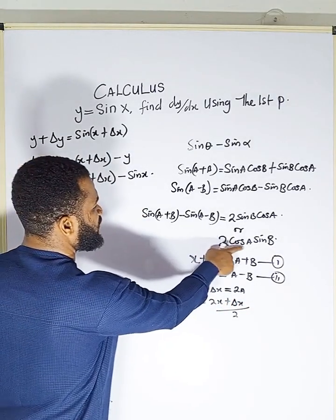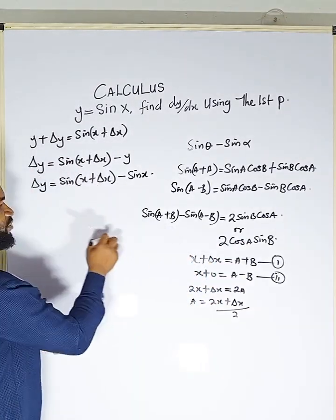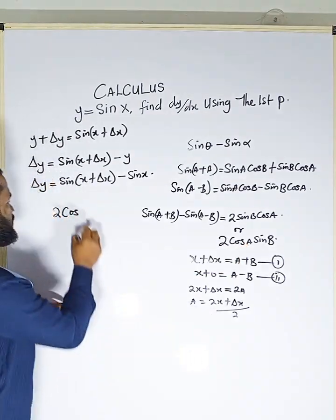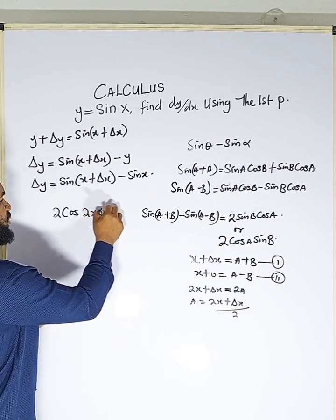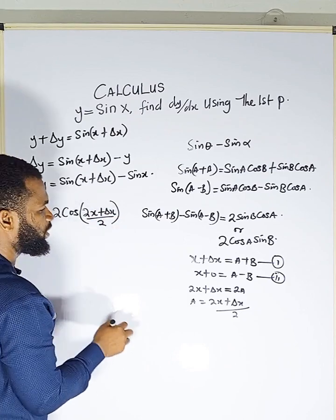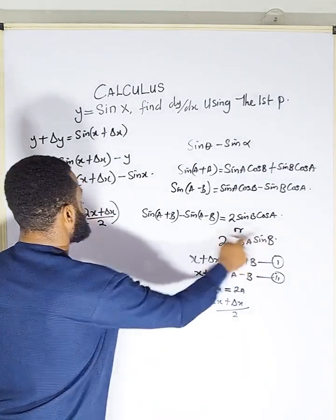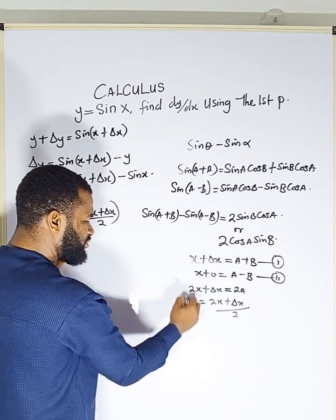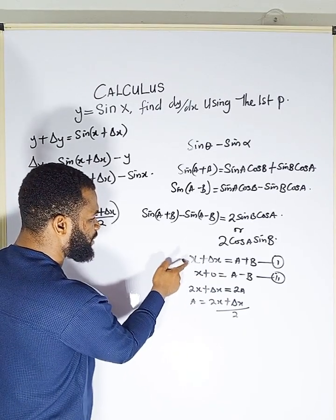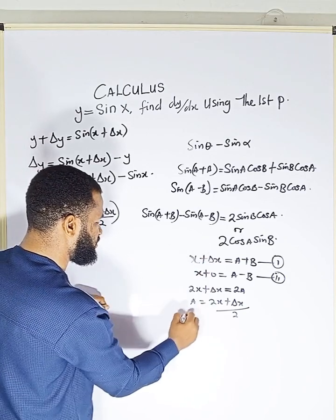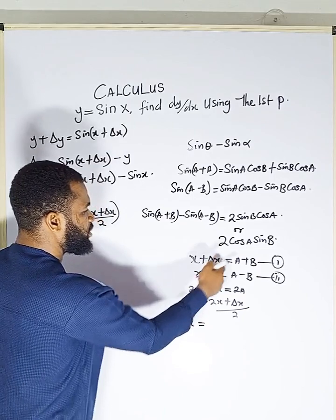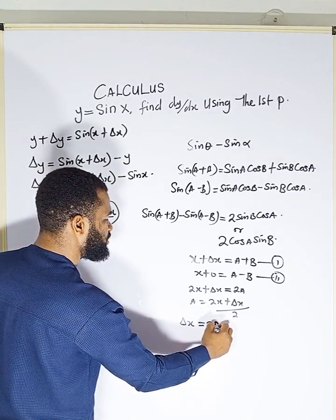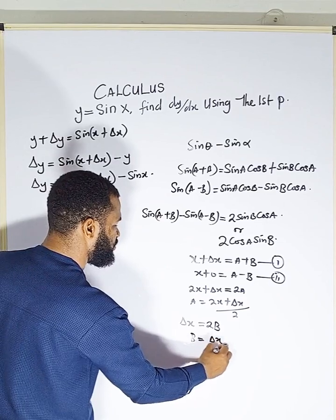Now in place of A I put (2x + δx)/2. Next I need to find B. Subtracting equation 2 from equation 1: δx minus 0 equals 2B, therefore B equals δx / 2.